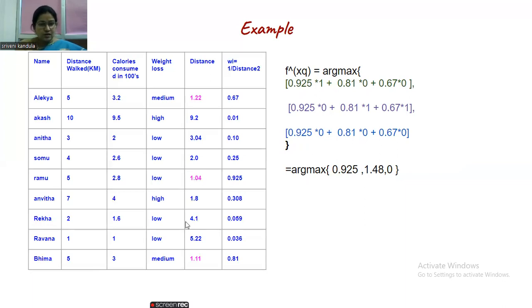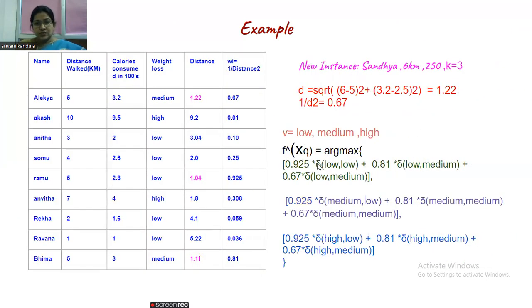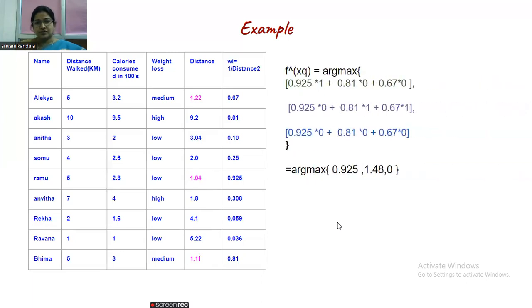Actually, the closest one is low, and the weight associated with this is 0.925. Though the value is least, based upon this weight value, we are going to give some weightage to the level. That is what we will be doing in the distance-weighted KNN. Hence, the new instance is classified as medium. Based on this value of 1.48, this we obtained for the target label v medium.